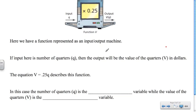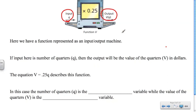Let's go back to our input-output machine, or function machine. Here we have a function represented as an input-output machine, and in this case we're talking about quarters. The input is the number of quarters, represented by Q, and the output will be the value of the quarters, represented by V in dollars. If we tell the machine how many quarters we have to know their value, we're multiplying them by 0.25, which is the value of one quarter.